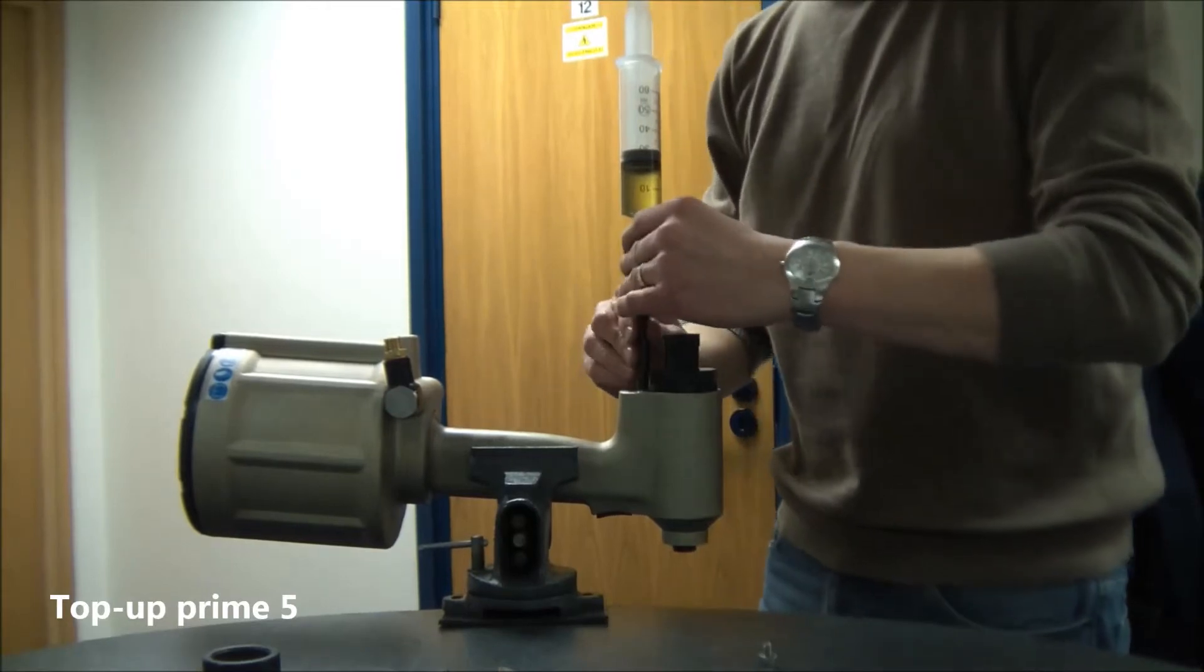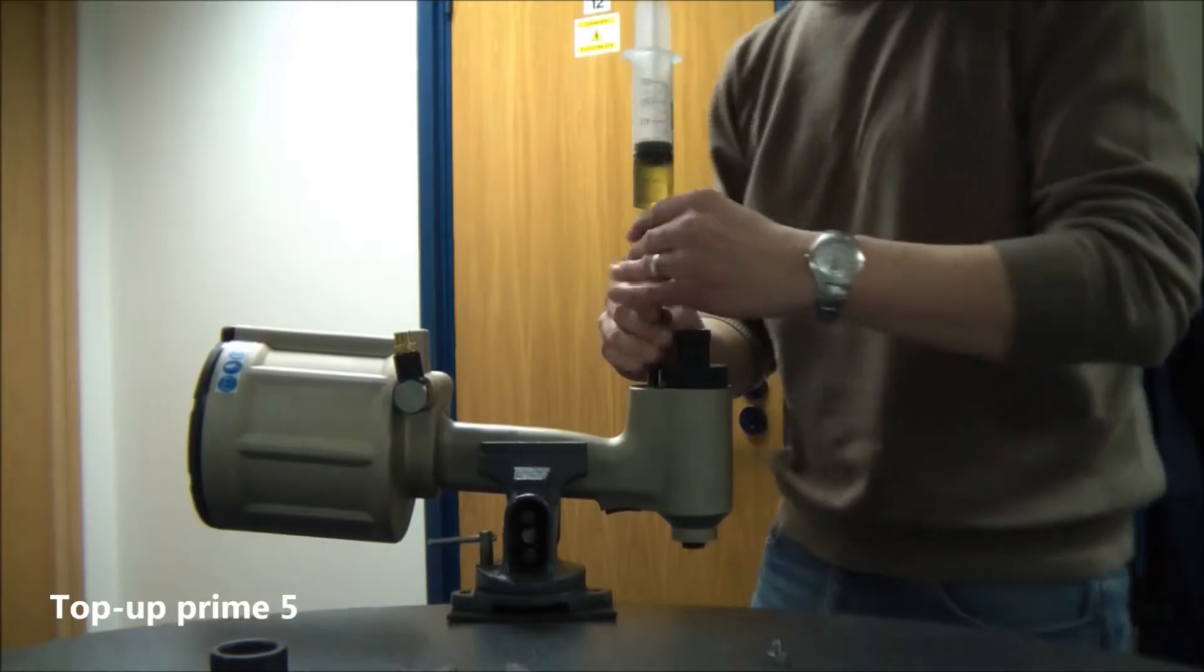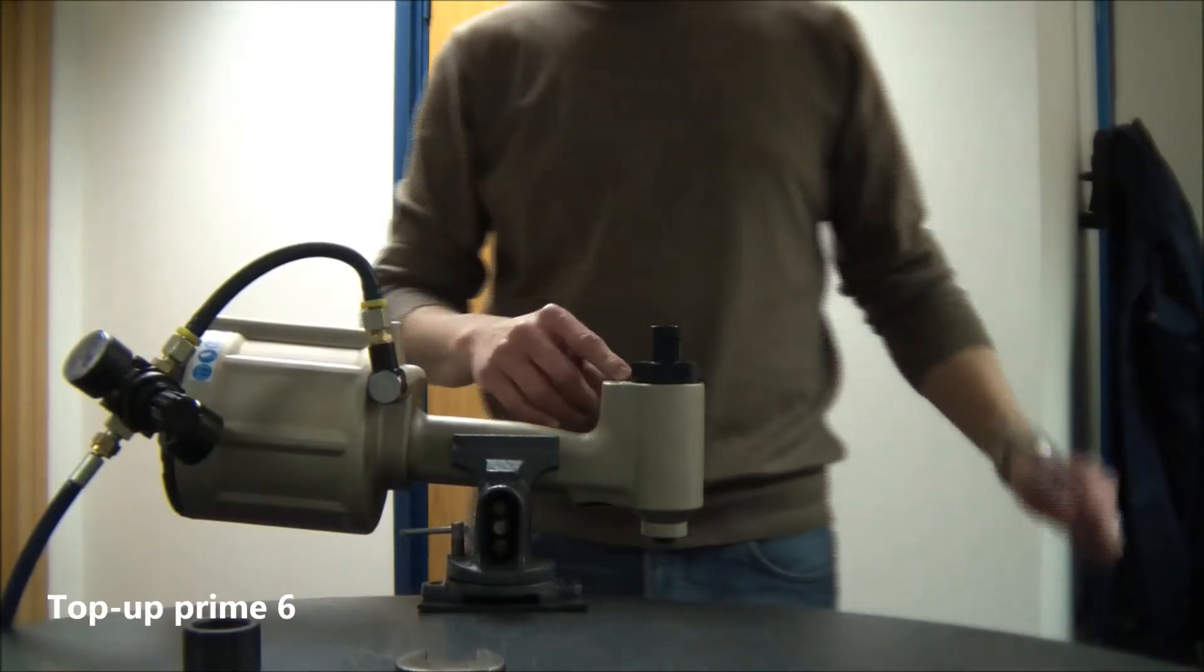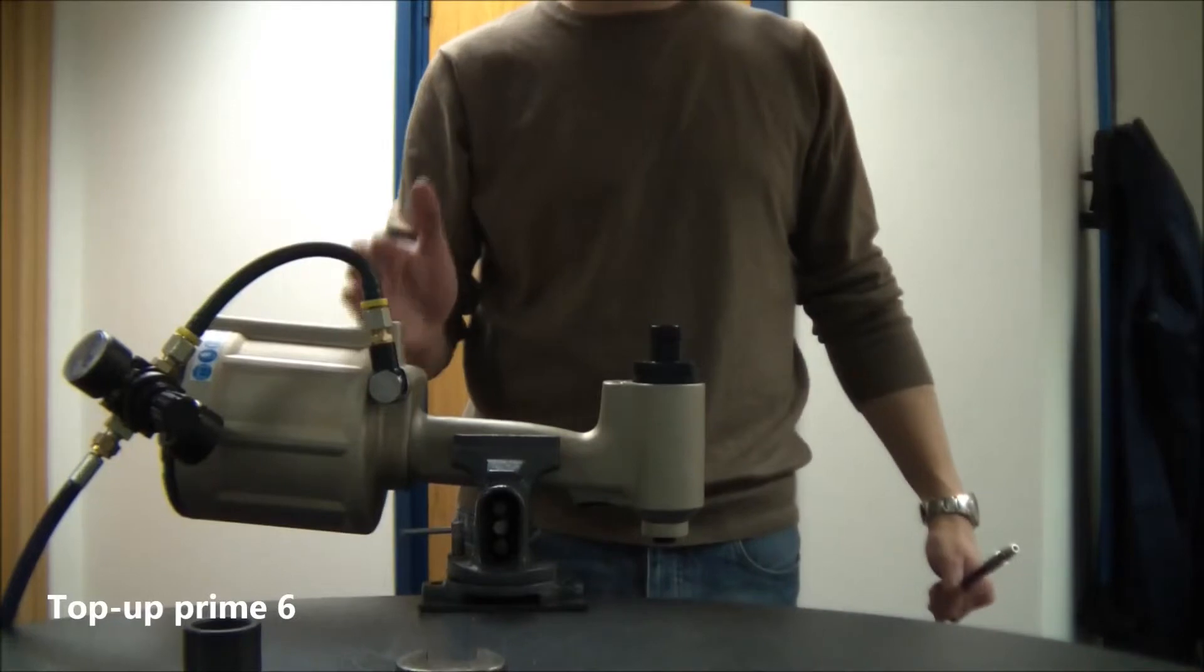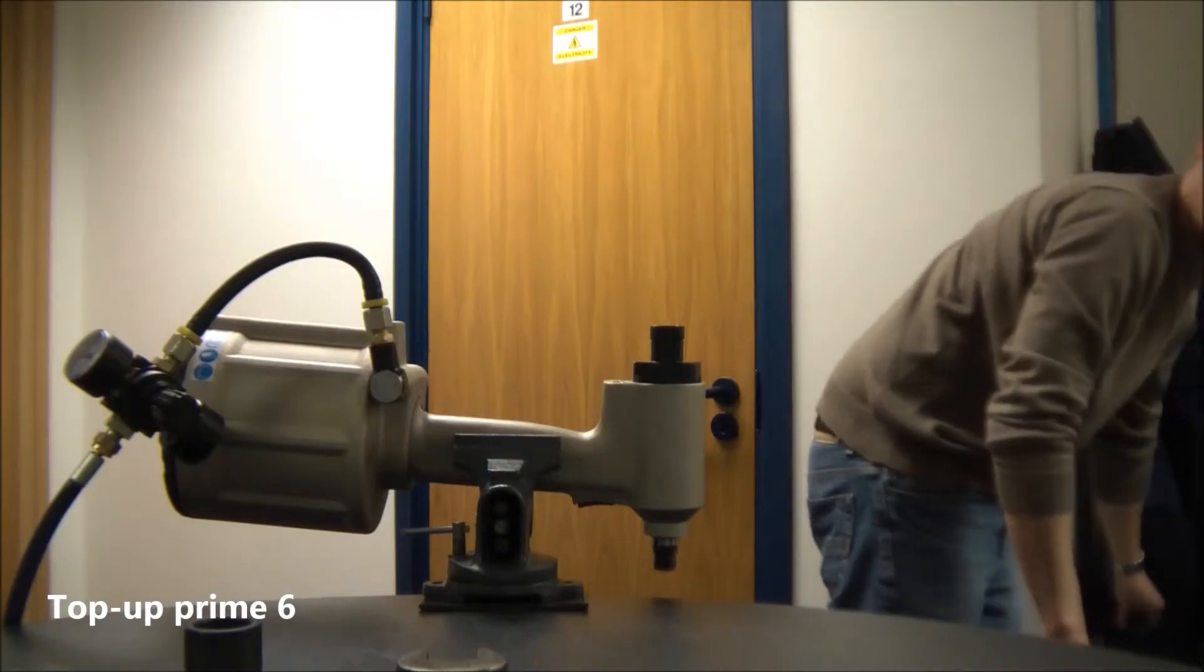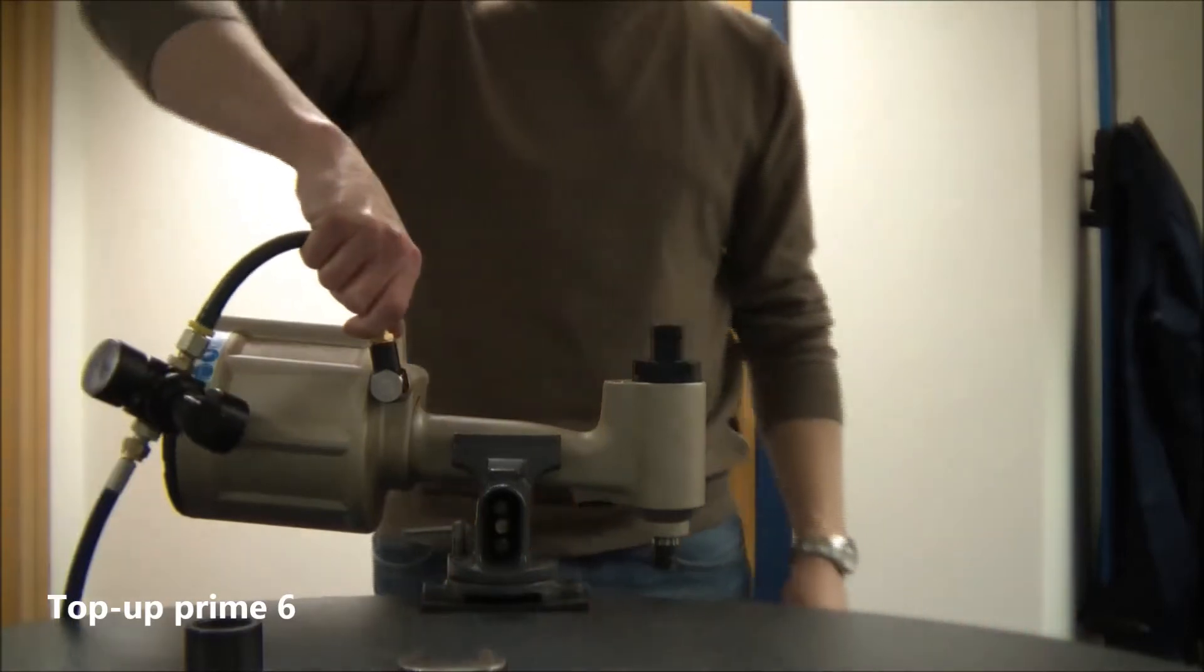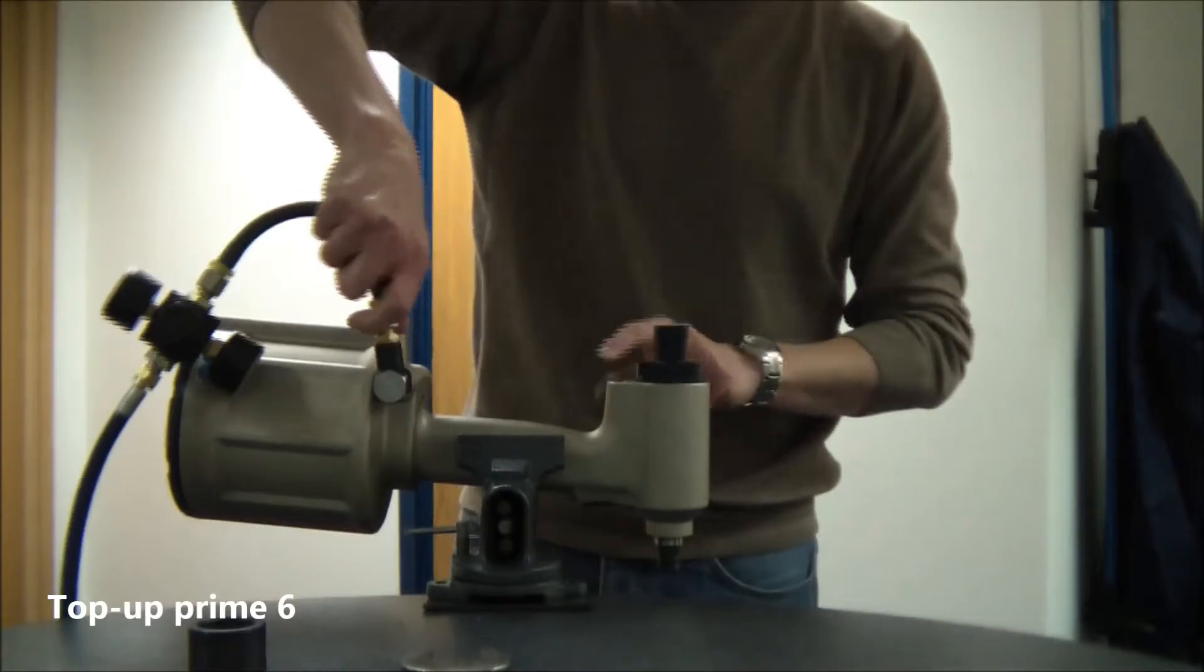After you've removed the pull stroke setter, remove the syringe and reseal the pull bleed port. After you've resealed the pull bleed port, then reconnect the air. This will then seat the air piston back in the top position. When that's happened, disconnect the air again. When you've done that, remove the two return bleed screws and be ready to prime the return side.